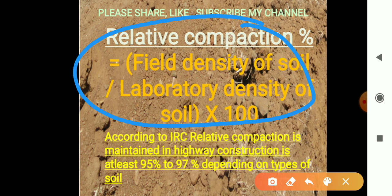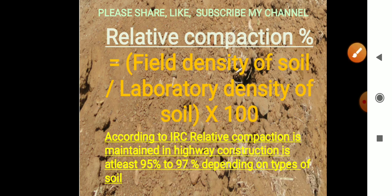In the laboratory density test, we find two values: OMC and MDD. Whatever laboratory density we get in the lab, we have to achieve that in the site. According to IRC, the relative compaction should be 95 to 97 percent. If it is less than 95 percent, there will be future problems for the highway, such as settlement, which causes various distress on the flexible pavement.